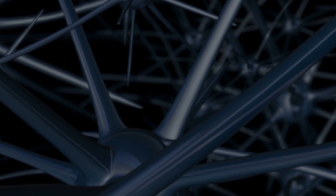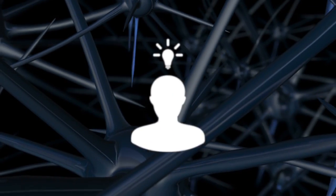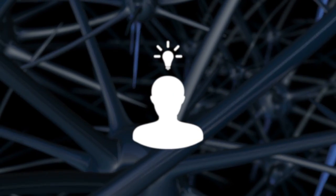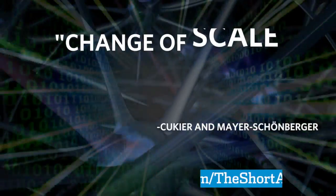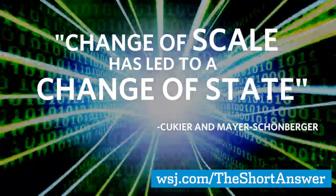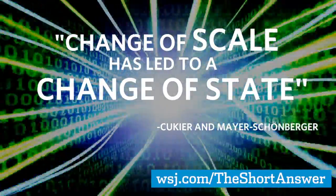Just as trillions of neurons firing in the human brain can form into a thing unto itself, a thought, Kukye and Meyer-Schonberger describe an emerging phenomena of big data. Change of scale has led to a change of state. That's the short answer.